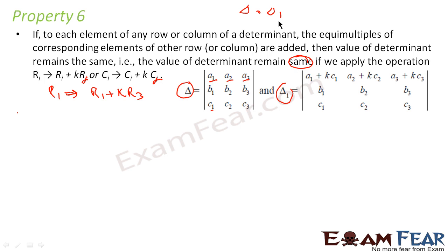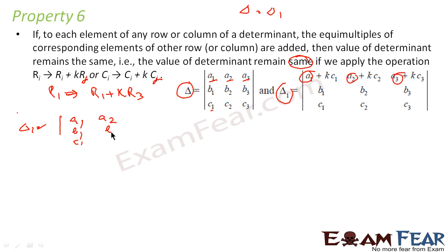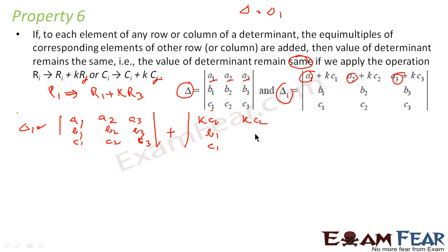One approach is to just expand it and try to solve it, but that becomes complex. To ease things, I'll take row 1 and break it. Since the last property says that if a row or column is written as a sum of two numbers, I can split this determinant. So this determinant is nothing but the original determinant with a1, b1, c1 in row 1, plus a second determinant where row 1 contains k·c1, b1, c1 in the first row, then k·c2, b2, c2, and k·c3, b3, c3.